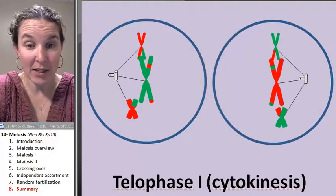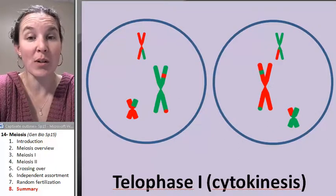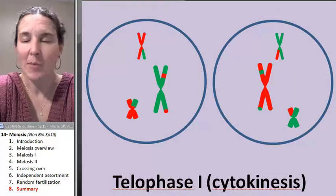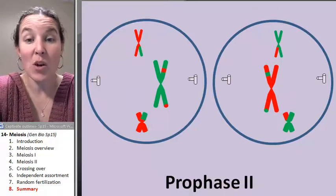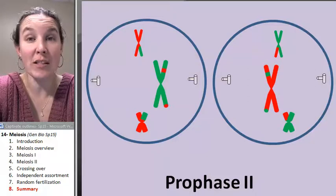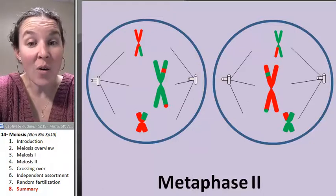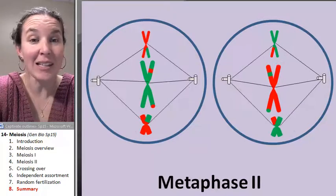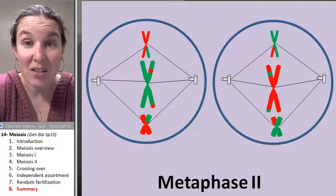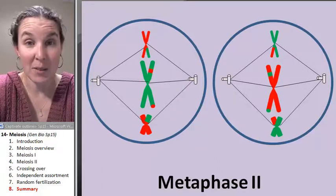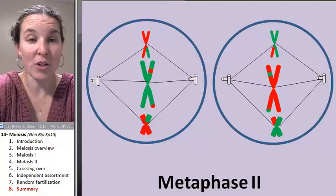Telophase is going to take place. Now we have two cells. Sometimes we unravel, sometimes we don't. But those two cells are going to head into prophase II. Now, metaphase II, we're going to line up our sisters on the metaphase plate.